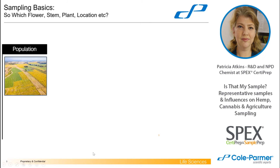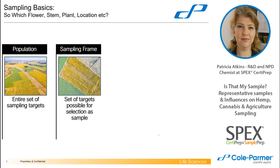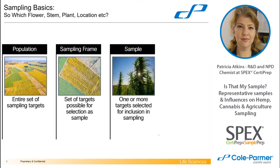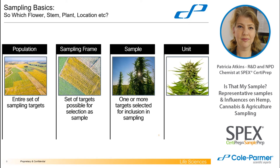Which flower, which stem, where on the plant are you going to sample? Let's look at understanding how a population is divided up. A population is the entire sampling set — for example, an entire grow. Then you create a sampling frame, the set of possible targets included in your sample. Then you select the sample — one or more targets you select for your bigger sampling plan. And then the unit is the actual smallest part of the plant you are going to take for sampling.